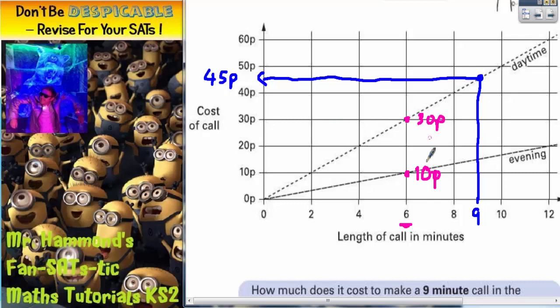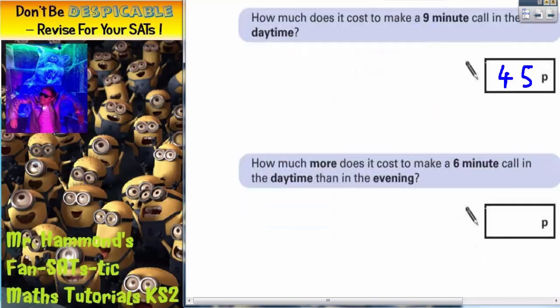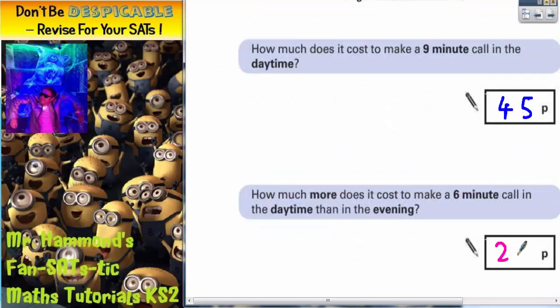So once you know that daytime is 30 pence and evening is 10 pence, how much more is it? Well it's very easy to do that. The gap from 10 pence to 30 pence is a gap of 20 pence, so it must be 20 pence more, and that is the answer that you need to put in there.